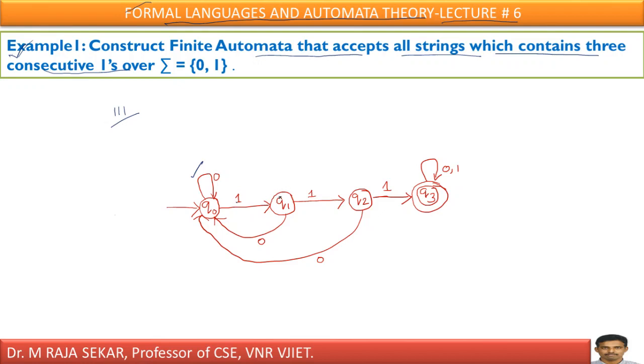In between, zeros are not allowed. If you keep 0 as an input, I will send back to the initial state. Even if I get a 0 here, I will send the transition back to the initial state.